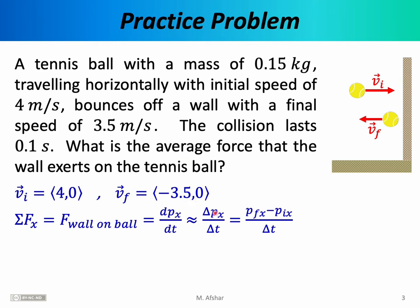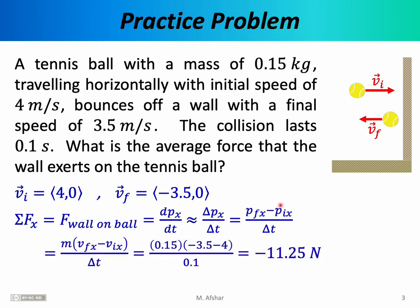Δp means the change in momentum, so we have p final minus p initial. We know that momentum is simply mass times velocity. The mass of the tennis ball does not change, so we can factor that out, and now we have v final minus v initial. v final is -3.5 and v initial is 4. So what we have is (-3.5 - 4) times the mass of the tennis ball divided by the period of collision — the amount of time the tennis ball is actually in contact with the wall. When we place all this into our calculator, we find that the force of wall on the ball is -11.25 newtons. It makes sense that the force is negative, indicating that the wall must be pushing to the left on the tennis ball in order to make it bounce.